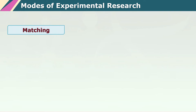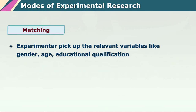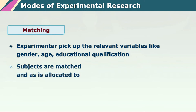Another mode that is often used — again it is quite difficult to achieve but many experiments do use it — is called the matching mode. In this, what you do is you try to pick up the relevant variables: they may be gender, they may be age, they may be the amount of education the person has had. And we try to allot one of each of this matched pair to each of the experimental and the control conditions respectively.